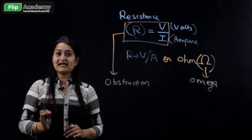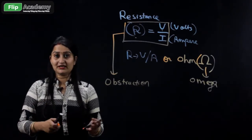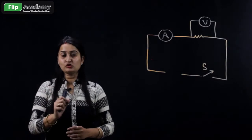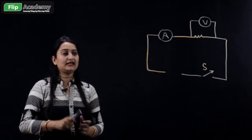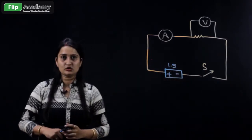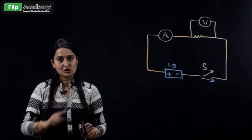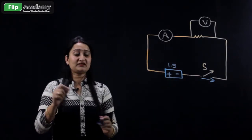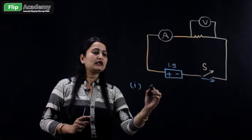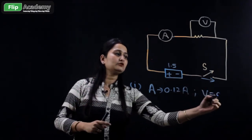Current is directly proportional to potential, and V equals IR is Ohm's law. But how did George Simon Ohm verify what he stated? Here is a simple experiment. In the experimental setup, we start with a 1.5 volt battery. When the switch is closed, current starts flowing. The ammeter gives a particular reading and so does the voltmeter. In the first condition the ammeter reading is 0.12 ampere and the voltmeter reading is 0.3 volt.